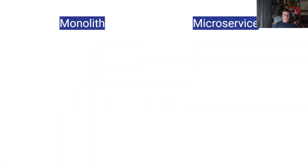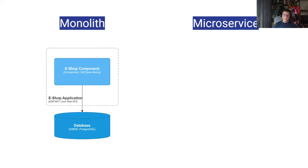Everything is easier to visualize with a diagram. I prepared a monolith diagram of a sample eShop or eCommerce application — I actually worked on a similar system for the previous two years, so I'm using that as inspiration. If it were a typical monolith architecture, you would have one application — for example, an ASP.NET Core Web API. All of the components in the system are going to be C# class libraries, and we have just one database in the system.